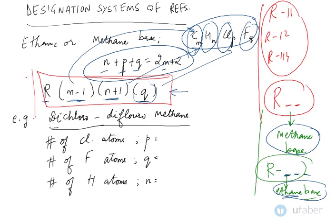Let us look at an example. You have a refrigerant whose name is dichlorodifluoromethane. Now how do you go about writing the chemical formula for this refrigerant?